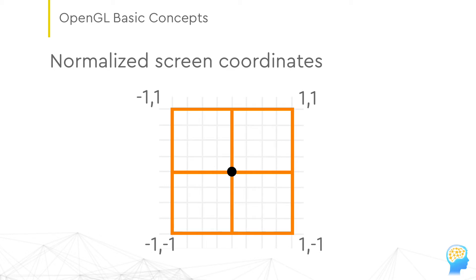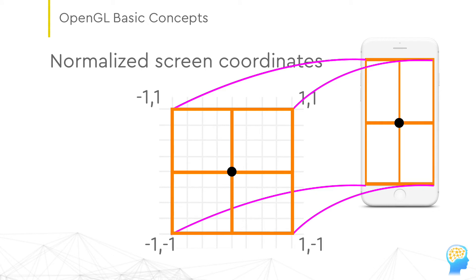Let's talk about screen coordinates. OpenGL uses so-called normalized device coordinates. As you can see, the whole area of the screen fits within a minus-one to one rectangle. This is a completely logical unit of measure — it's not aware of the actual pixel dimensions of the device's screen. Still, it is possible to make an accurate pixel-perfect screen coordinate system in OpenGL, which we'll cover later in the transformations section.